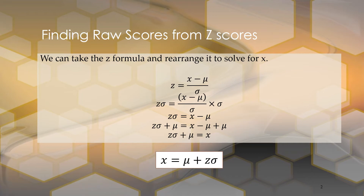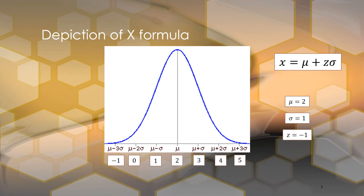Now I'm going to talk about how to use this formula. Say we have a distribution that has a mean of 2 and a standard deviation of 1, and we want to know what a raw value would be in this distribution if it had a z-score of negative 1.